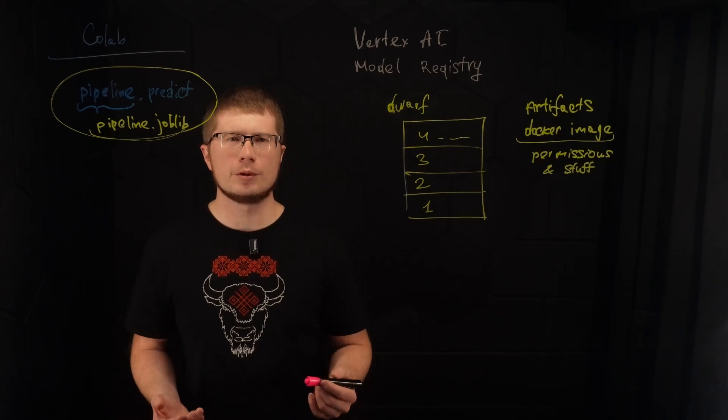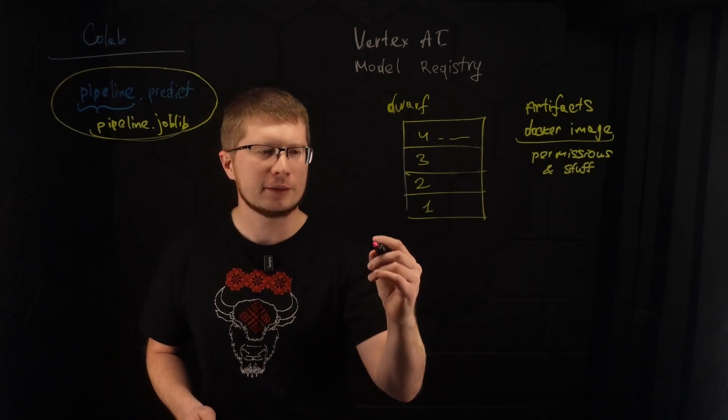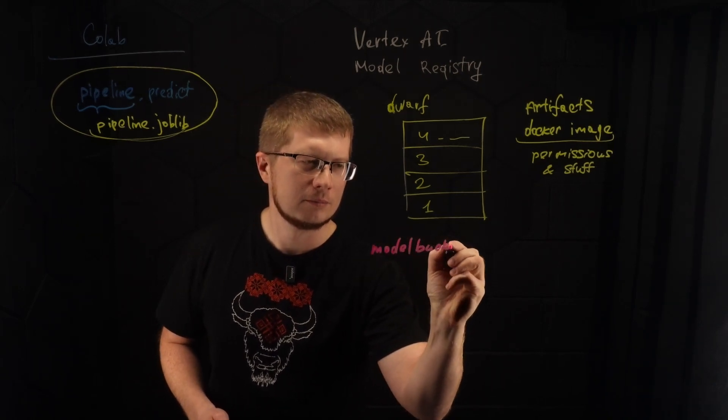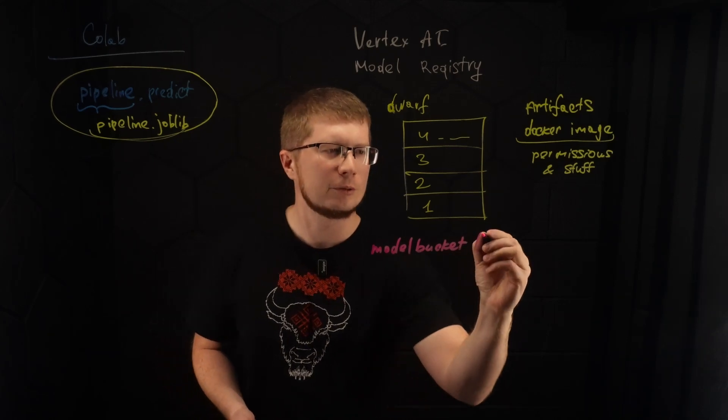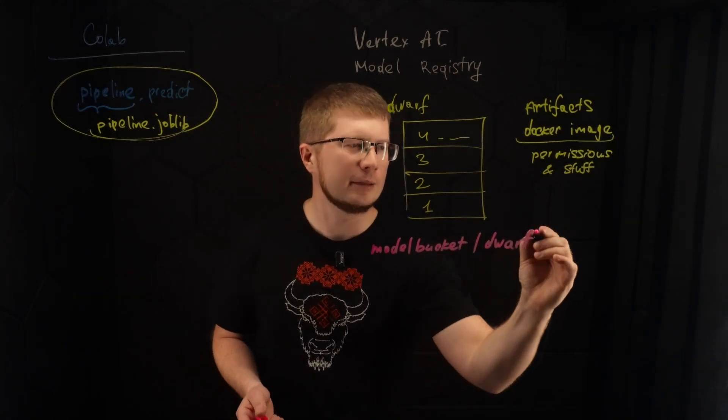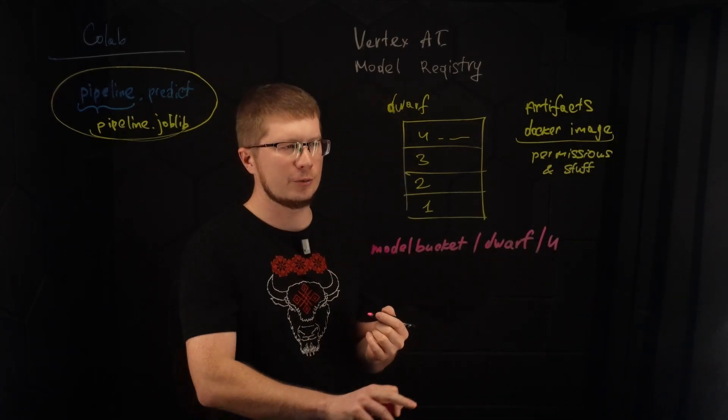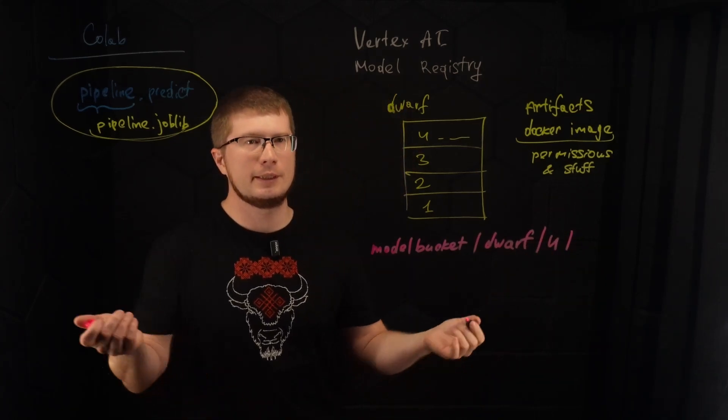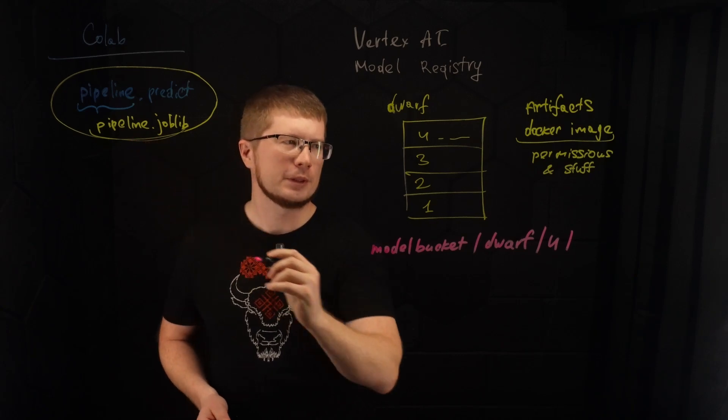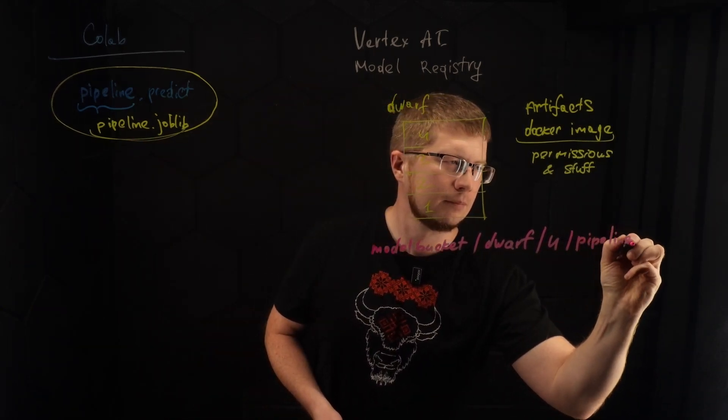If you want to deploy the model manually, you first need to create a subfolder in the storage bucket. Let's call our storage bucket model bucket and create a subfolder called dwarf. And for additional clarity, we can even create one more subfolder which corresponds to model version, which is 4. It's not required to do, but let's make it meaningful. And we copy the serialized object in joblib format. It's going to be pipeline.joblib.